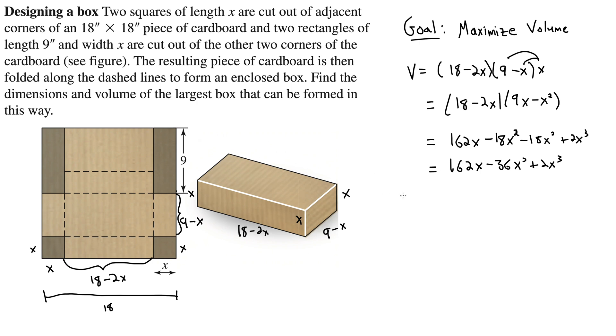Now we're ready for the derivative, which we can do without any product rule or anything like that now. So we have 162 minus 72X plus 6X squared. And that's what we want to set equal to 0 and solve. Solving this will give us our critical points.